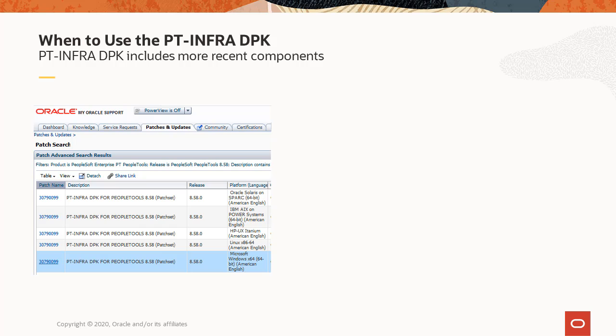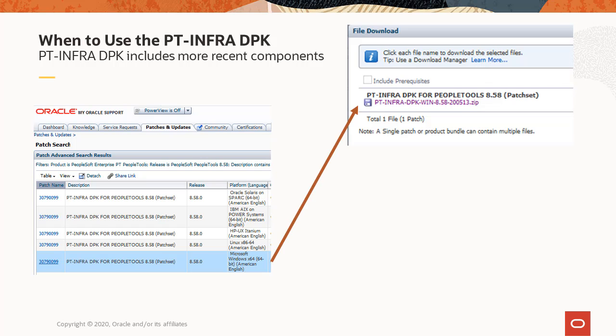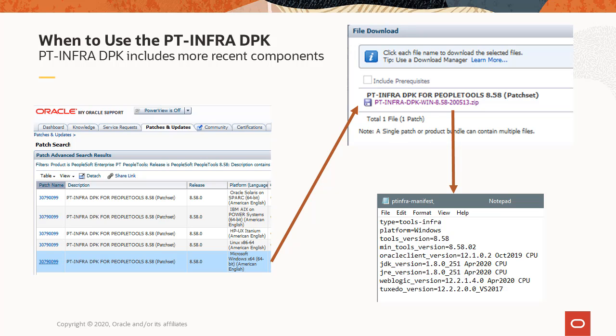When planning your new installation, check for the PT-Infra-DPK by searching for the latest PeopleTools patches in My Oracle Support. The PT-Infra-DPK is double-zipped and the name includes the date it was made available. To decide whether to use the DPK in your new installation, you will need to download it and extract the manifest file that lists the software components. Use the PT-Infra-DPK when it includes more recent software components than the PeopleSoft patch DPKs or PeopleSoft image that you're installing. In the following demonstration, we will compare the manifest for the PT-Infra-DPK with that for the PeopleSoft application images to decide whether to make use of the PT-Infra-DPK.